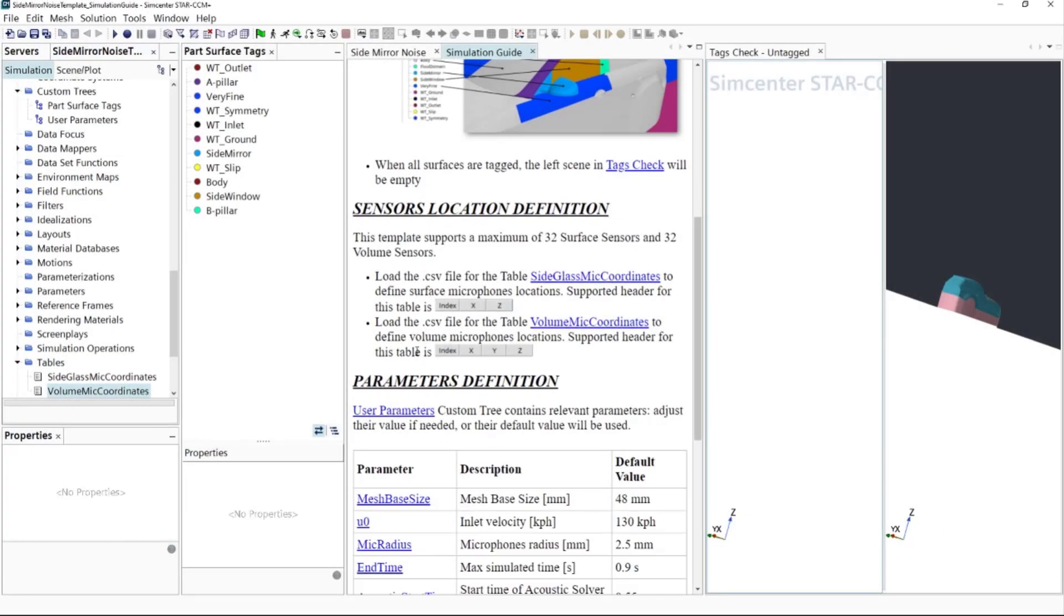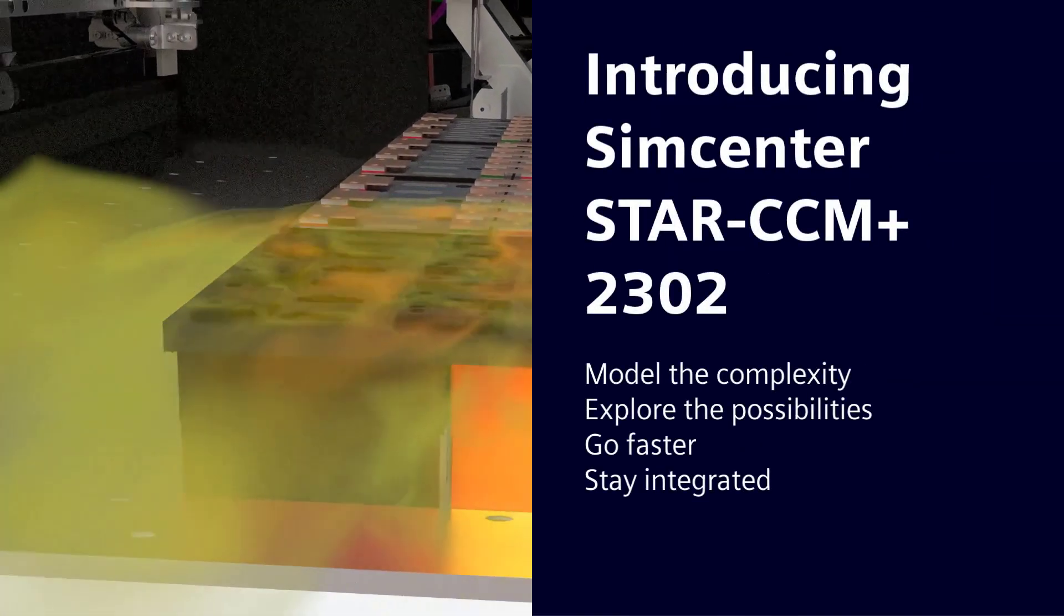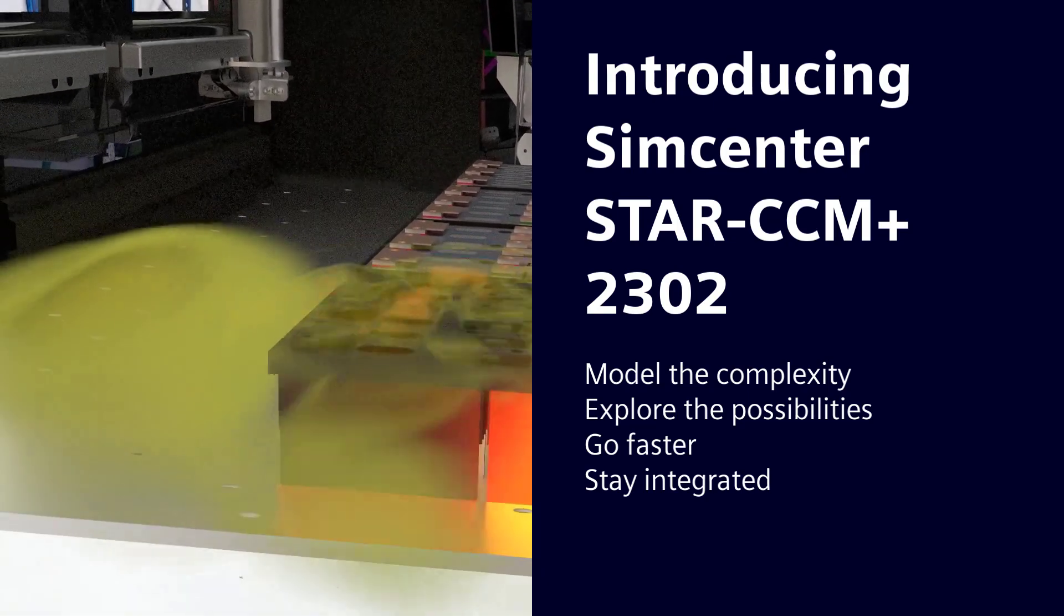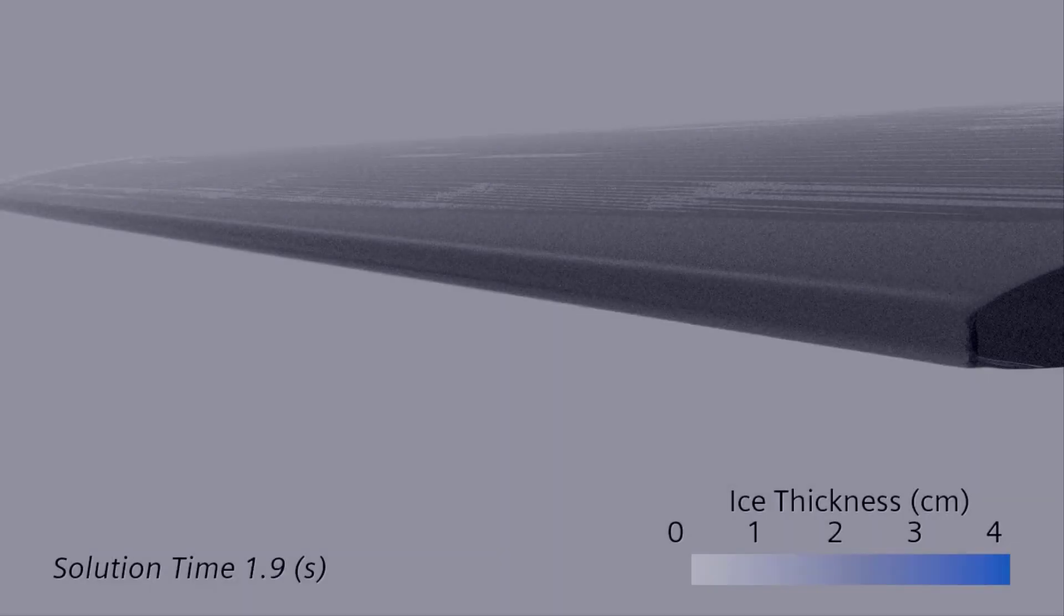Document, share and review detailed model information within the CFD software. Simcenter Stasis Mplus 2302 comes with numerous new capabilities that let you go faster while modeling the complexity.